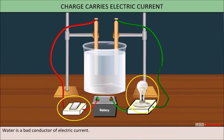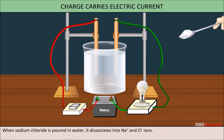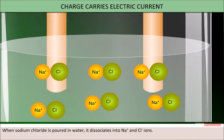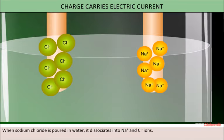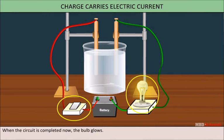Water is a bad conductor of electric current. When some impurities like sodium chloride are poured in it, sodium chloride dissociates into sodium ions and chloride ions. When we switch on the bulb now, we will notice that the bulb glows. This indicates that in liquids, conduction of electricity occurs by ions.